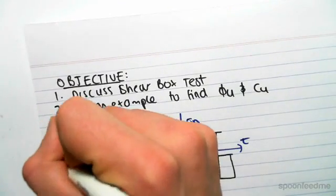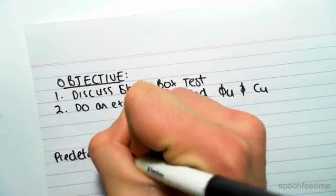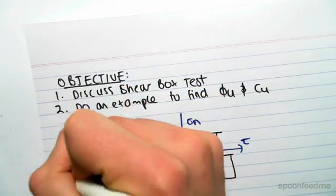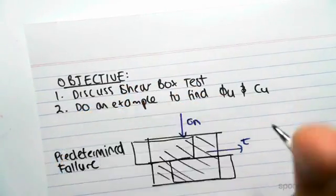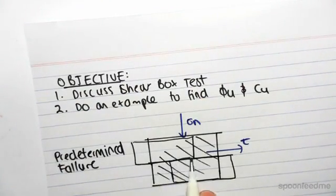So what happens in the shear box test is we have a predetermined failure plane, so we've decided that the failure plane we're looking at is this plane here.